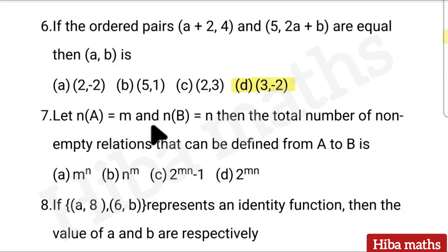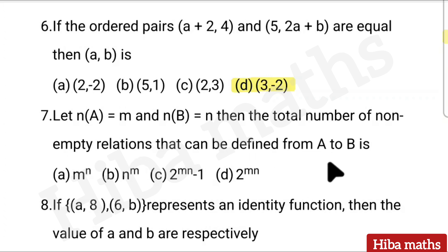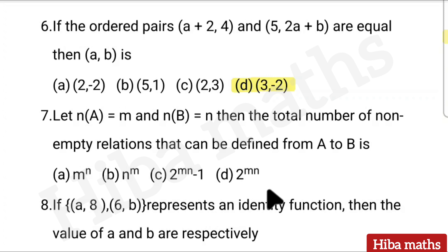Seventh question: Let n(A) equal to m and n(B) equal to n. Then the total number of non-empty relations that can be defined from A to B is — options: m^n, n^m, 2^(m×n) - 1, 2^(m×n). Correct answer: D.